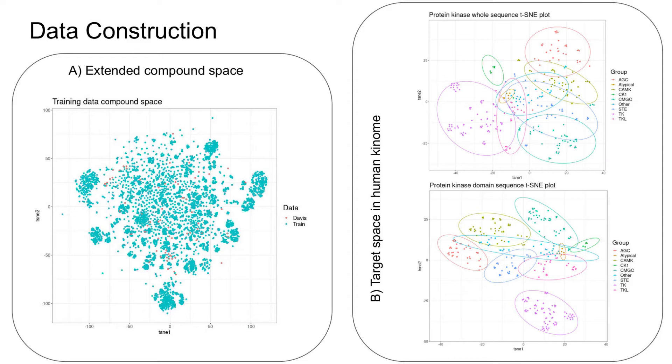To get a better feeling for compound space, a similarity matrix based on Morgan fingerprints was used as input for t-SNE analysis. Several clusters became apparent with a middle cloud of not well-separated compounds. As can be seen on the left plot, 68 compounds from Davis are shown in red and the rest of the compound space collected from other resources are shown in blue.